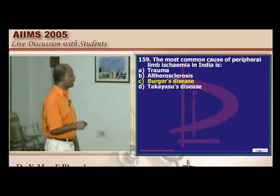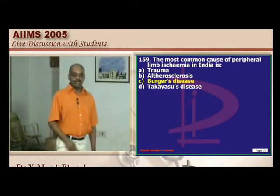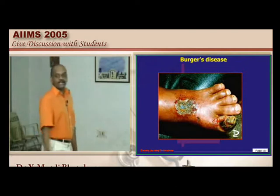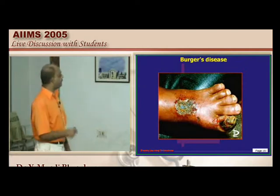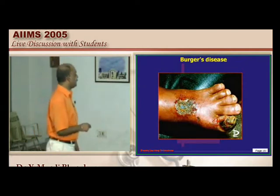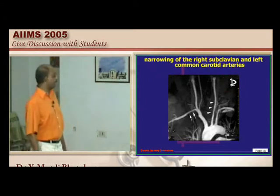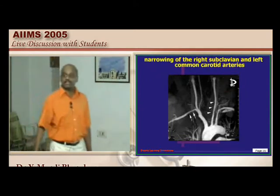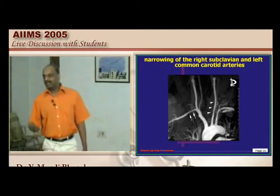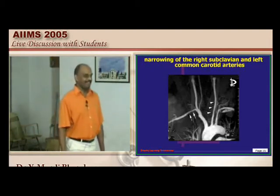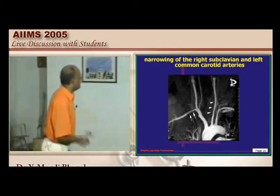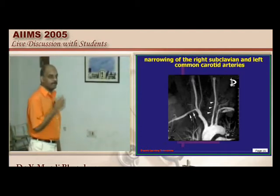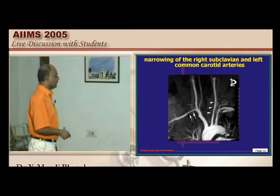The most common cause of peripheral limb ischemia: while atherosclerosis is a common prediction, in India Buerger's disease — thromboangiitis obliterans — is very common and is found in smokers.